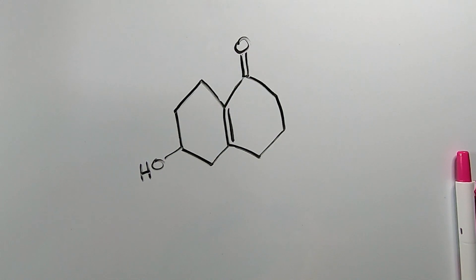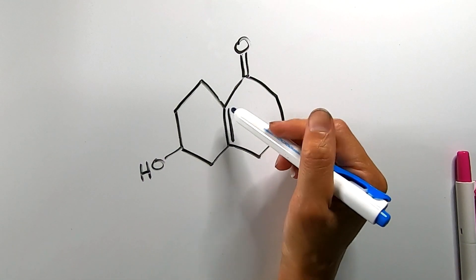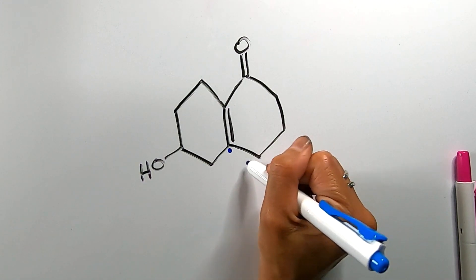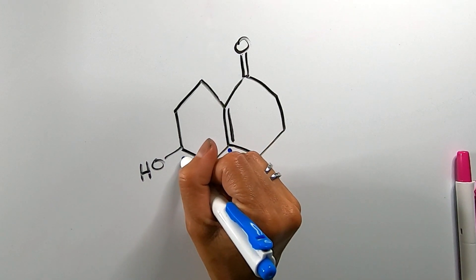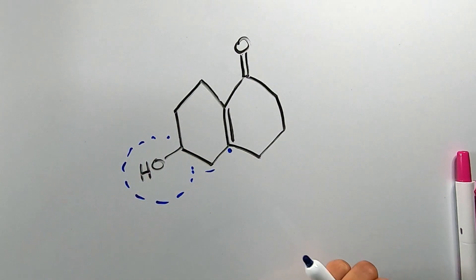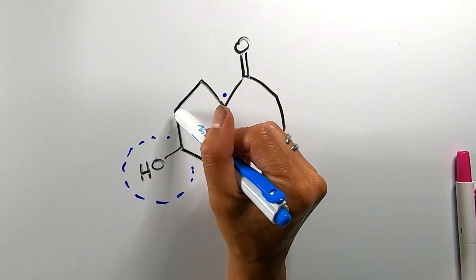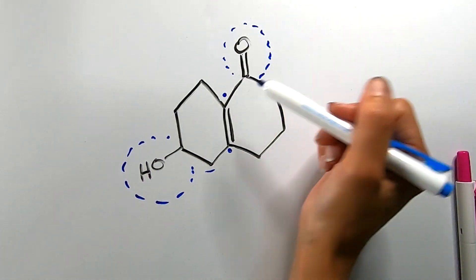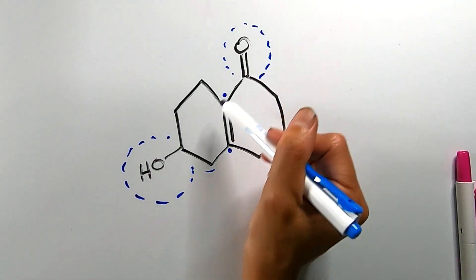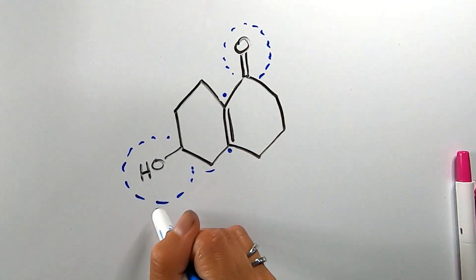Now let's determine cis-trans or E/Z conformation for this more complex fancy molecule. We're going to do it the same way as the previous examples — align our eyes with the double bond, tilting to the right a little bit. On this carbon, going one way I have a bunch of carbons, but going the other way I have a carbon and a hydroxyl group, which makes that the priority. On the other carbon, going one way I have a bunch of carbons, but the other way I have a carbon with a double-bonded oxygen, so that gets priority on this carbon. The two priority groups are on opposite sides of the double bond.